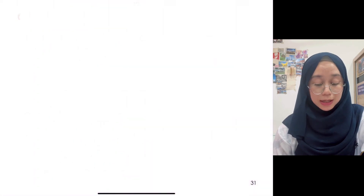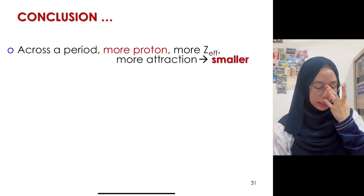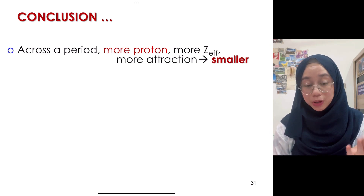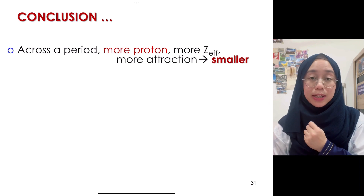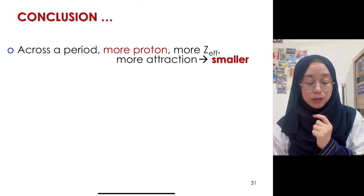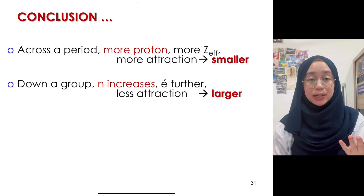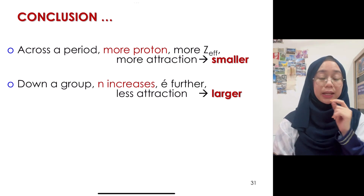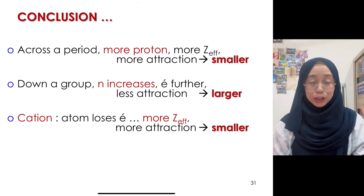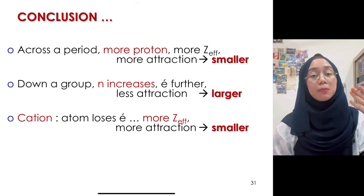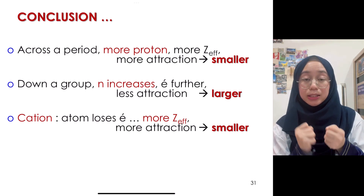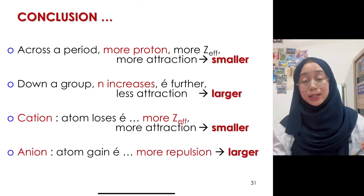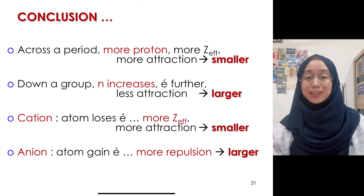In conclusion, combining what we learned before and what we just covered: across the period, more protons means higher ZEff, stronger nucleus attraction, so atomic size becomes smaller. Down the group, the principal quantum number increases, so electrons are further apart and size becomes larger. For cations — losing electrons increases ZEff, stronger attraction, so cations are smaller than their atoms. For anions — gaining electrons causes more repulsion between electrons, so the size becomes larger.